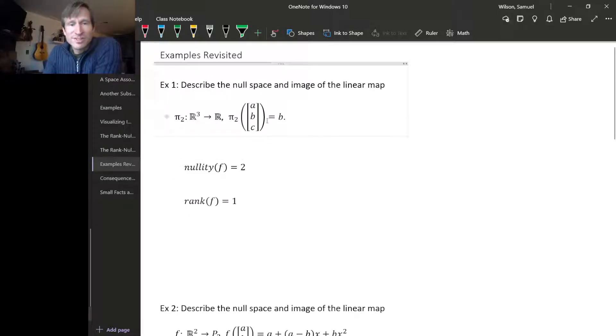So the first one was this projection map π₂ that goes from R³ to R. The nullity that we calculated for this was 2, the dimension of the null space is 2, clearly because the null space is spanned by (1,0,0) and (0,0,1). The rank of this map is 1, because the dimension of the image space is 1. The image is all of R, so it's one-dimensional.